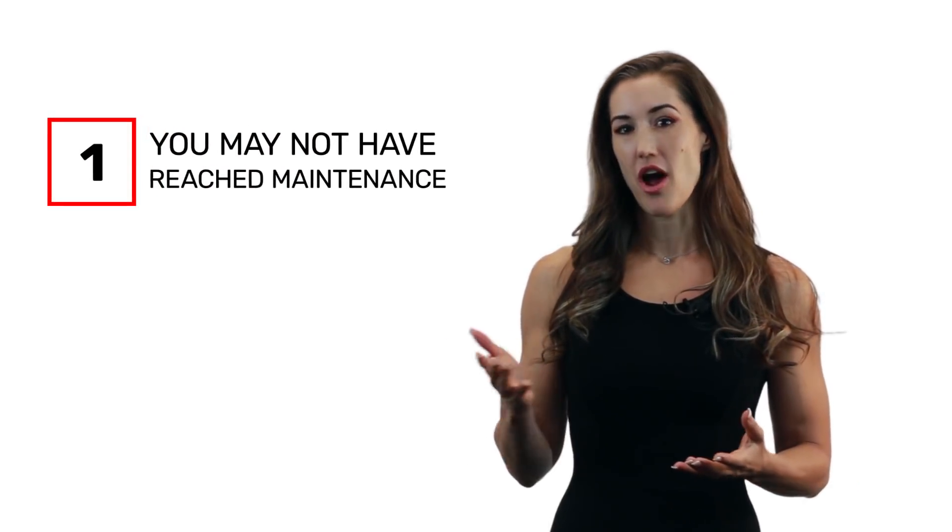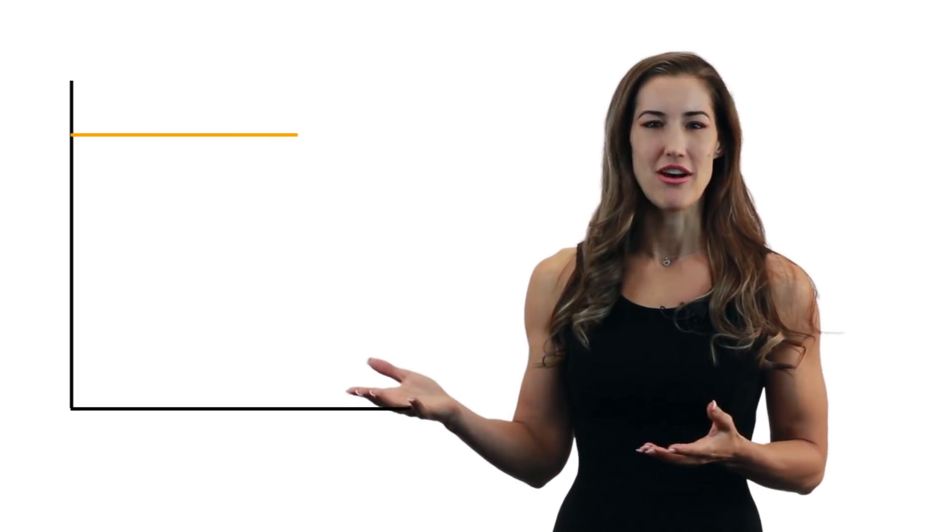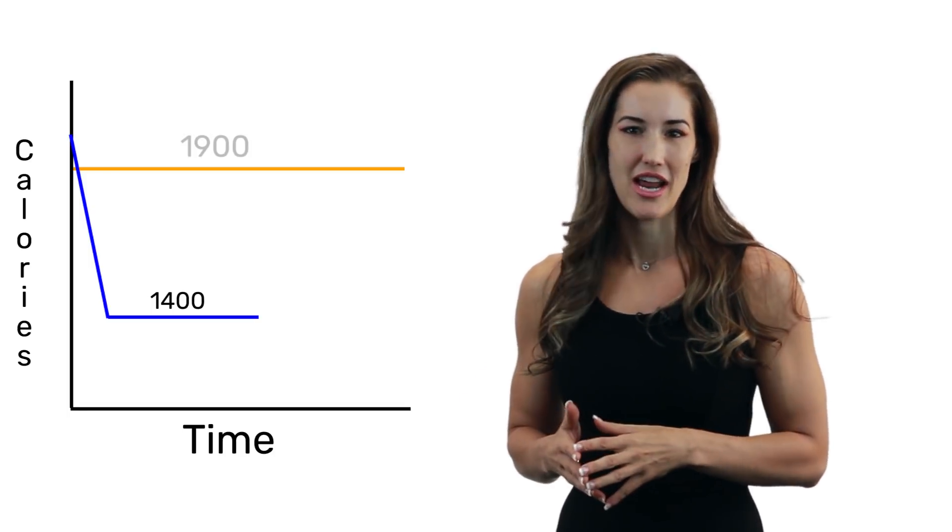One is that if you're just coming off a diet, you may not have reached your maintenance calories yet. So what do I mean by this? Well, imagine that you were eating about 2,000 calories before your diet. And then you cut calories down to, let's say, 1,400. So theoretically, you're in a 600-calorie deficit. By the time you finished your diet, your metabolism may have adapted and slowed down just a little bit, so your maintenance calories may be at right around 1,900 now.